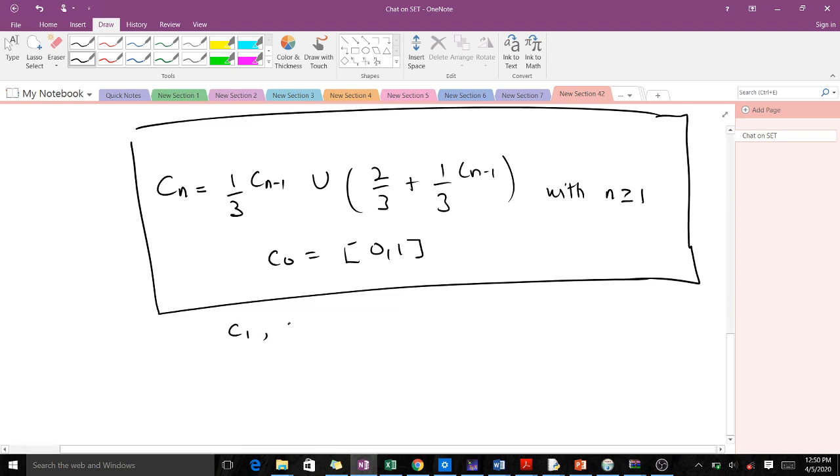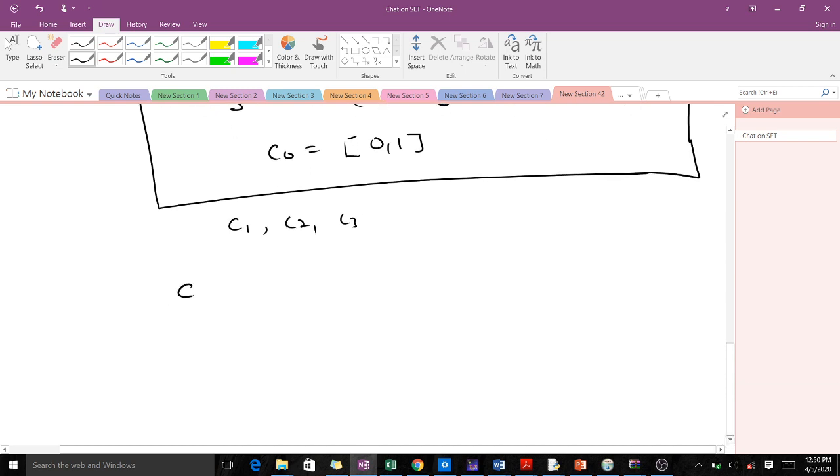We will learn how to use this relation to find C_1 and C_2. In finding C_1, comparing it with the formula, we have C_1 = (1/3)C_0 ∪ (2/3 + (1/3)C_0). But we know that C_0 is given by the closed interval [0,1].